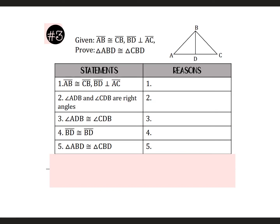For this next proof, reason number one is given. You should be marking AB and CB. When BD is perpendicular to AC, we know that we're drawing in right angles. So here's BD and here's AC, and the right angles appear where they intersect. We know those are right angles because that's the definition of perpendicular.